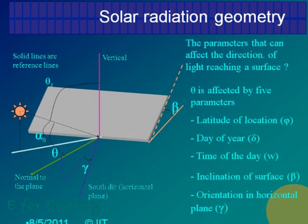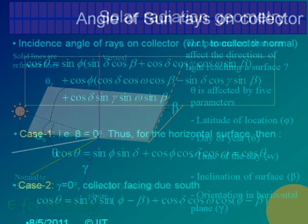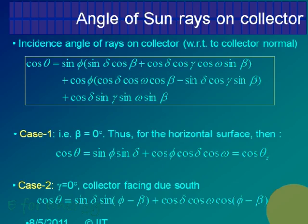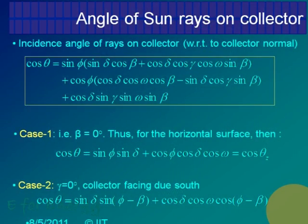We should know the relationship of all these angles with respect to alpha or the incident angle, which I always want to be 0. The simple expression given for this is: cos(theta) = sin(phi)·sin(delta)·cos(delta)·cos(gamma)·cos(omega)·sin(beta) + cos(phi)·cos(delta)·cos(omega)·cos(beta) − sin(delta)·cos(gamma)·sin(beta) + cos(delta)·sin(gamma)·sin(omega)·sin(beta).